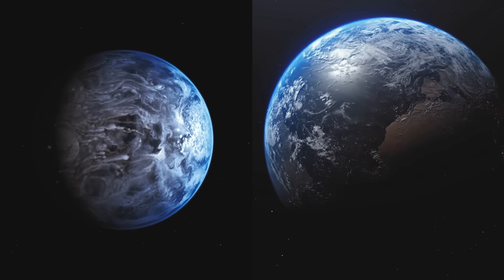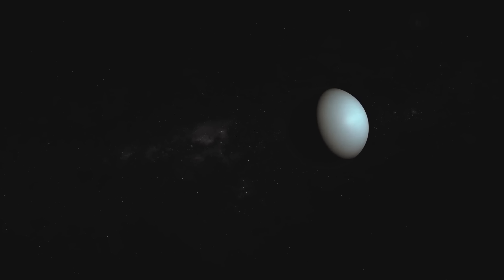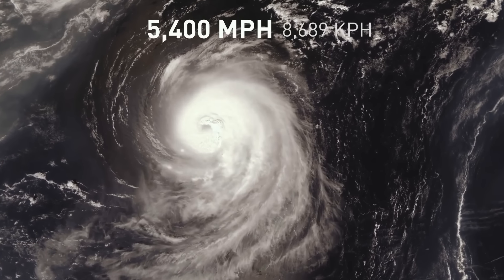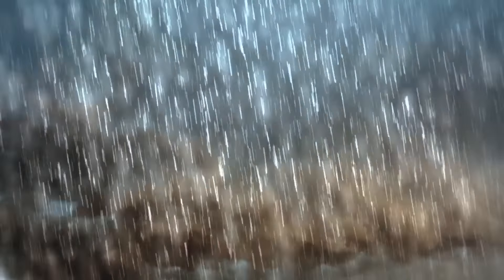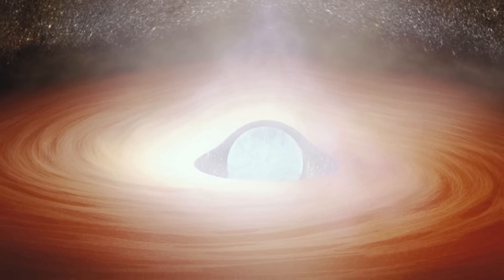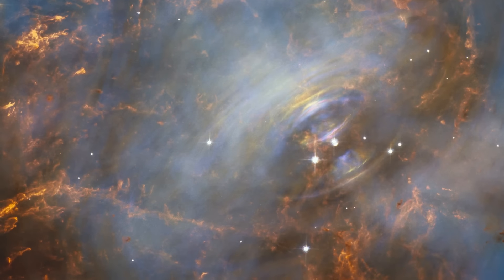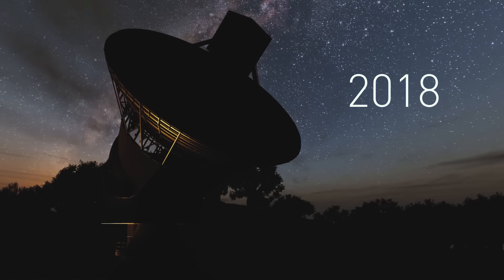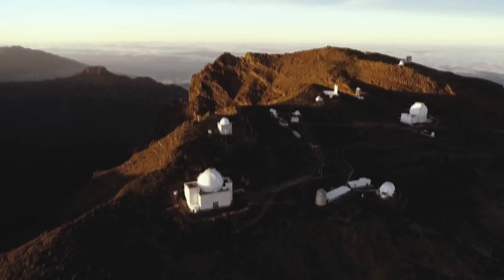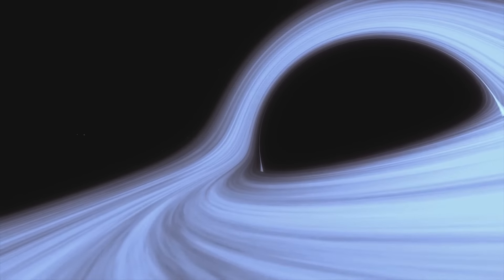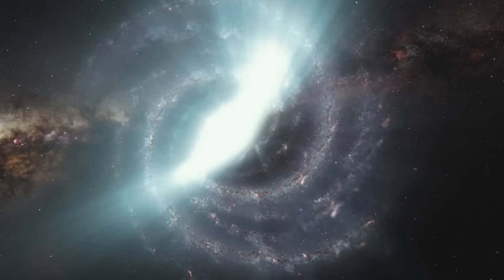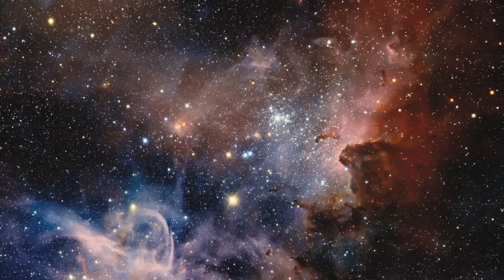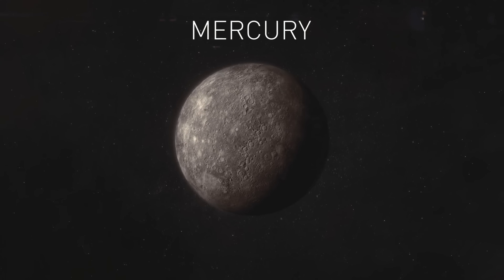Bright blue exoplanet HD 189733b looks peaceful and eerily familiar. Doesn't it resemble Earth? But this appearance conceals the planet's terrifying nature. There, the winds blow at 5,400 miles per hour. It's seven times the speed of sound. But that's not the worst. It rains glass, sideways, in this scorching, hot world. Neutron stars are ultra-dense collapsed cores of giant stars. They emit X-rays or radio waves. But in 2018, astronomers discovered a weird stream of infrared light. It seemed to be coming from a neutron star 800 light-years away from our planet. The most plausible theory is that this signal was probably produced by a disk of dust surrounding the star. But there isn't enough evidence to confirm this idea.